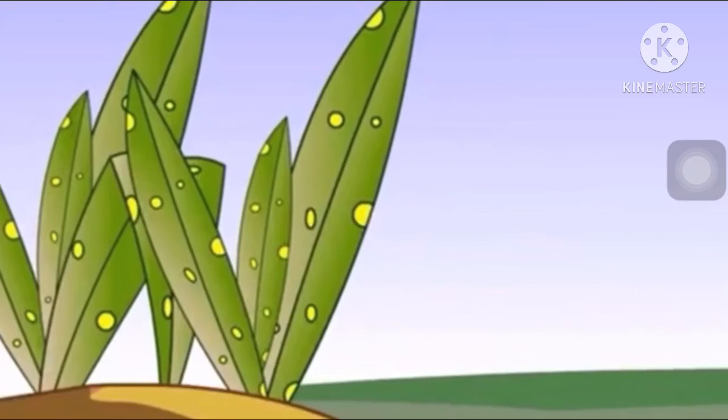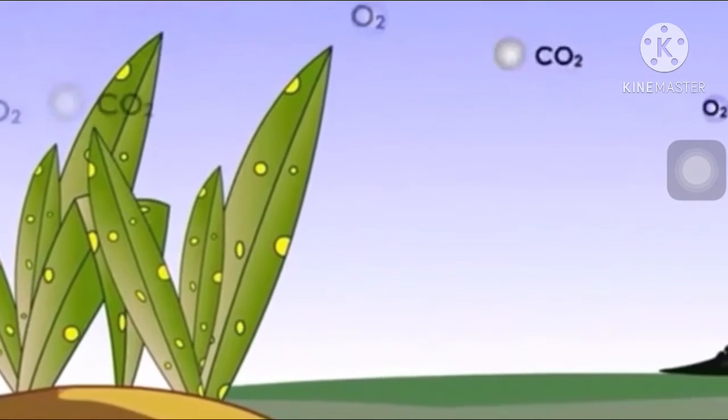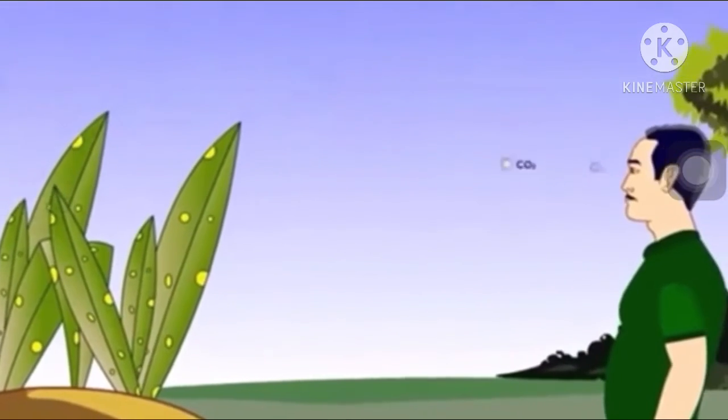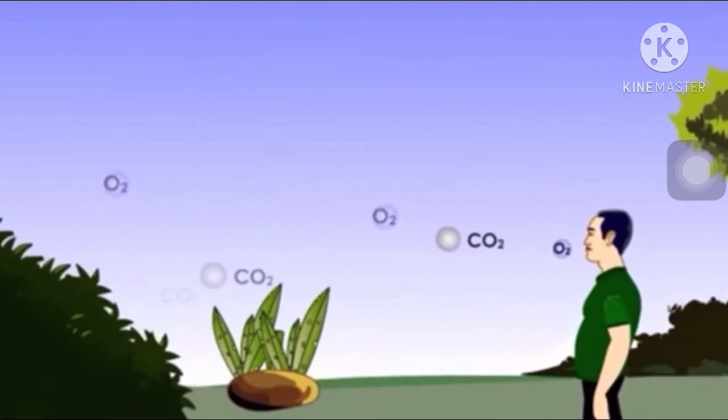The percentage of oxygen in the air is maintained by the oxygen given out by the plants during photosynthesis. Also, plants take up carbon dioxide from the air for photosynthesis, thereby preventing the increase of carbon dioxide in the air.